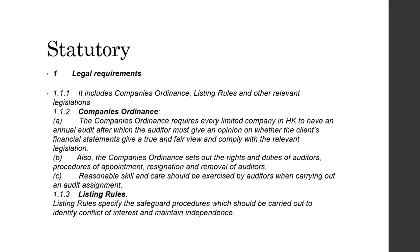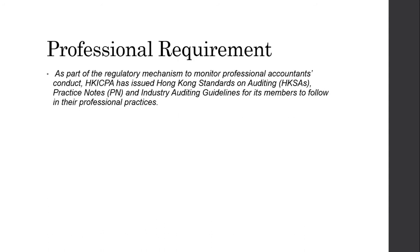Number two, as part of legal requirements, is the listing rule. Listing rules specify the safeguard procedures which should be carried out to identify conflict of interest and maintain independence. In other words, listing rules are procedures which have been set so that when this information is brought into perspective, conflict of interest will not arise and the independence of auditors shall be maintained.